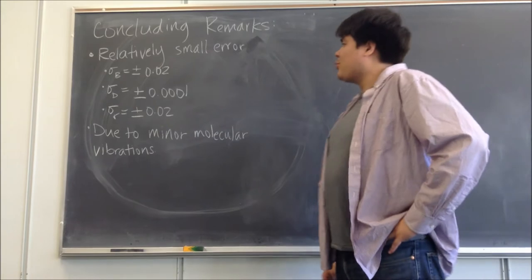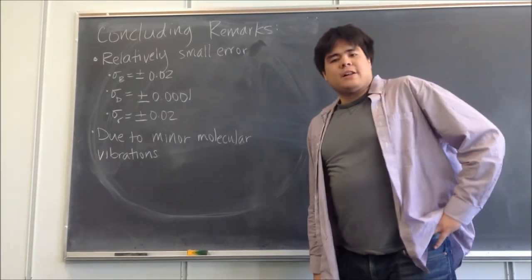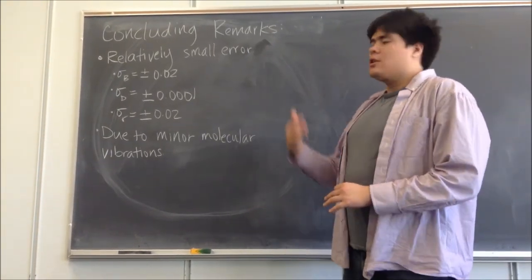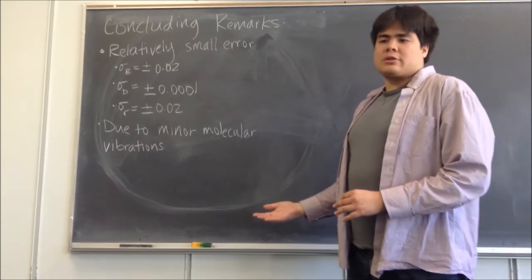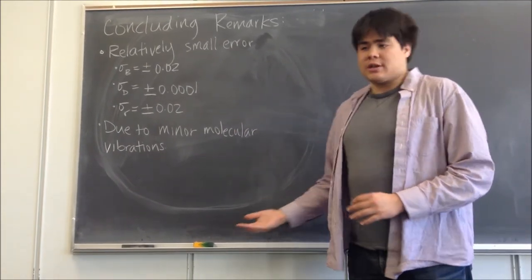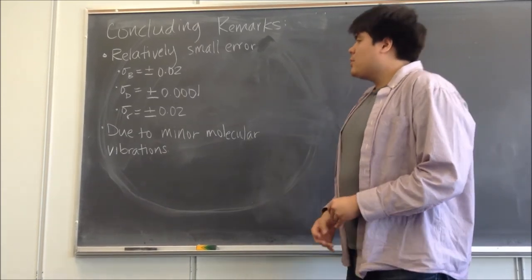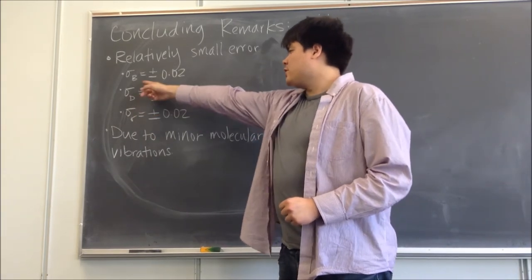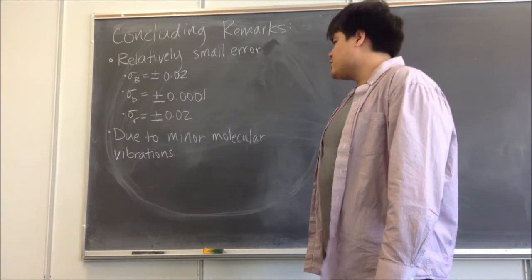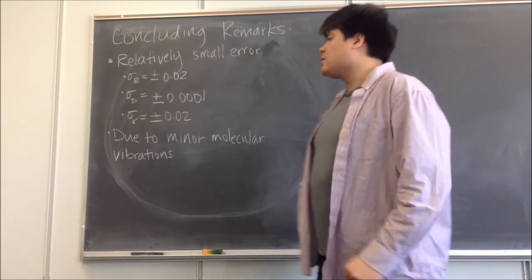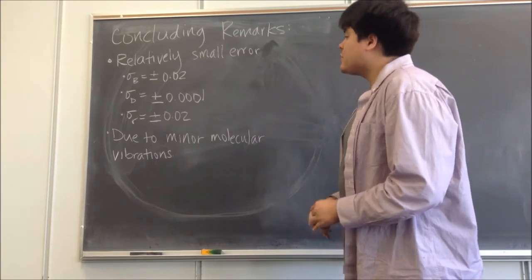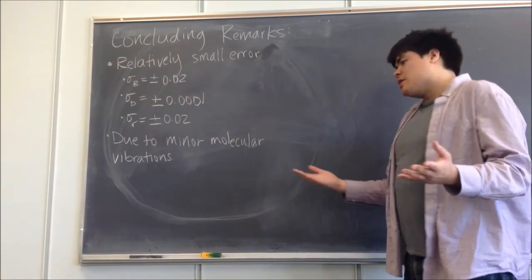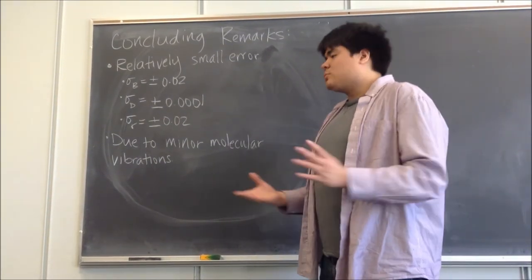In finishing up this report, I want to talk about error analysis. I have the different percent errors written out in terms of standard deviations: the standard deviation of the rotational constant, the standard deviation of the centrifugal distortion constant, and the standard deviation of the bond length. These are pretty small values, which indicates that we have pretty small errors, so the results from this experiment were pretty good.